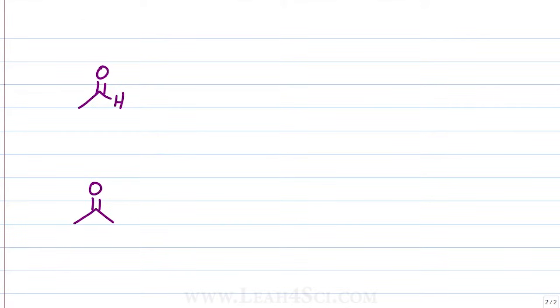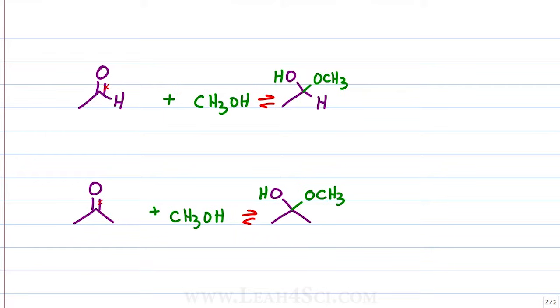This reaction starts with a carbonyl that gets attacked with an alcohol which is an oxygen nucleophile at the carbonyl carbon. We can start out with an aldehyde or with a ketone. When the oxygen nucleophile attacks, we break the carbonyl so that the oxygen is still bound along with the incoming alcohol.